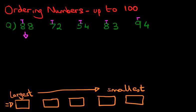So move the first one down and we say, how many tens does it have? It's got eight tens. 72 has seven tens. 54 has five tens. 83 has got eight tens. And the last number is 94, which has got nine tens.